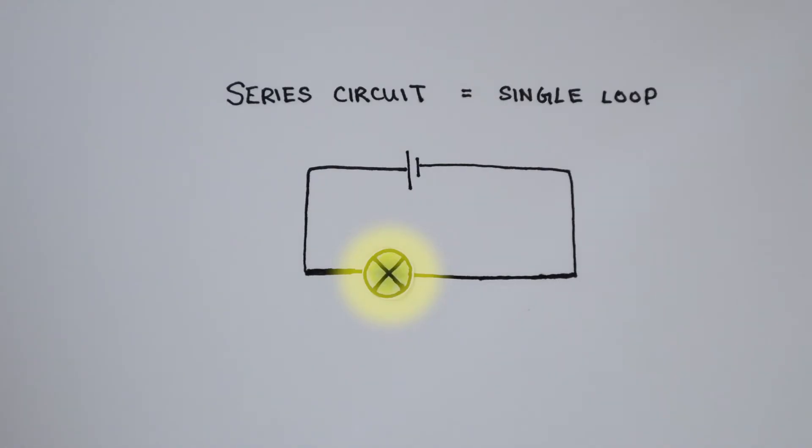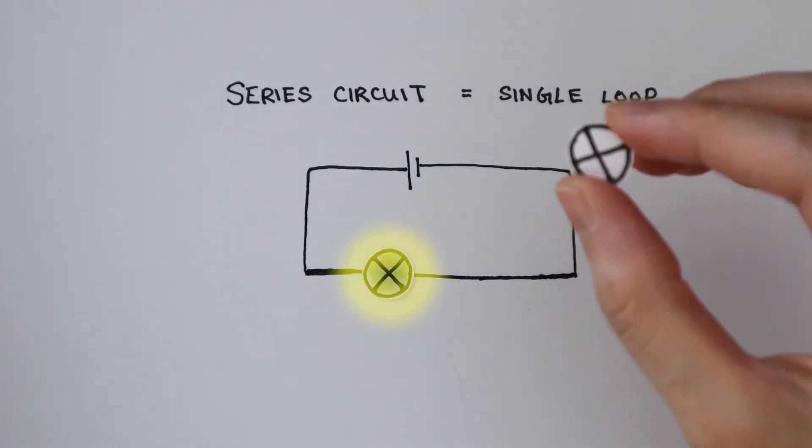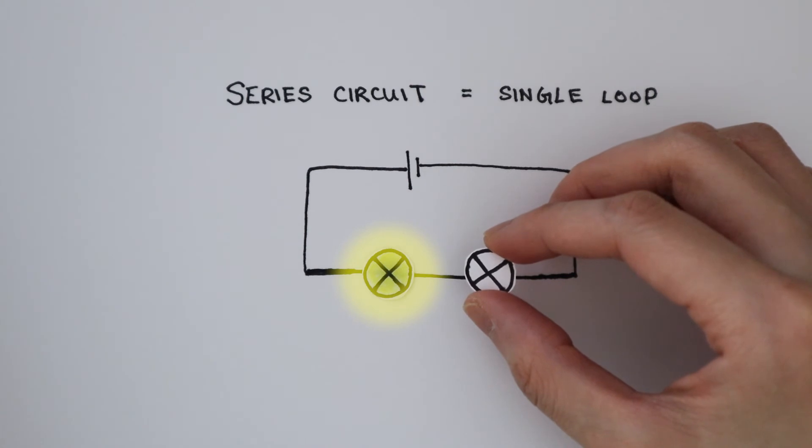Here's a question to test your understanding of series circuits. Here's a series circuit with a cell and a bulb. What happens to the brightness if I add another identical bulb in series?